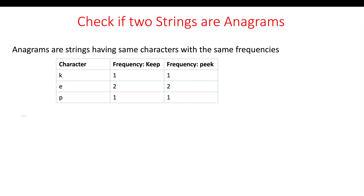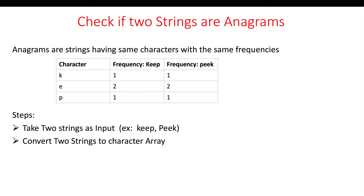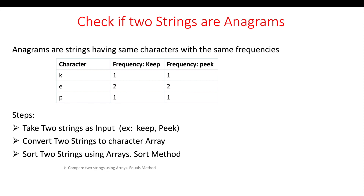Let's see the steps we are going to follow to solve this problem. First, we take two strings as input — for example, 'keep' and 'peak'. Whenever we want to compare two strings, we need to convert them to a character array. Then we sort both arrays using the Arrays.sort method, which sorts in alphabetical order. Once sorted, we use Arrays.equals to check if both arrays are equal — if yes, the strings are anagrams; if not, they are not anagrams.